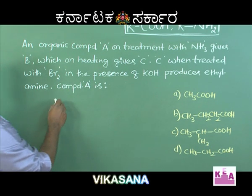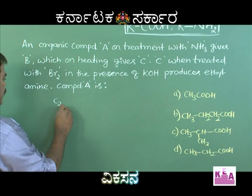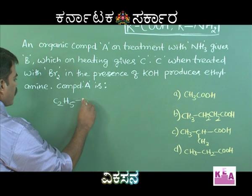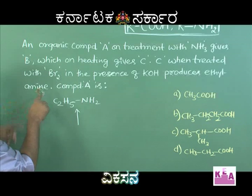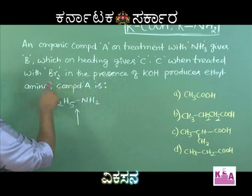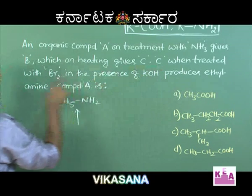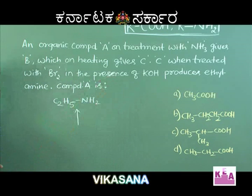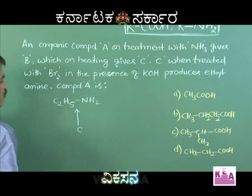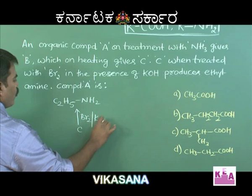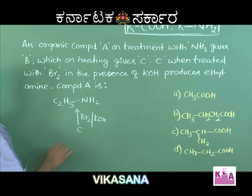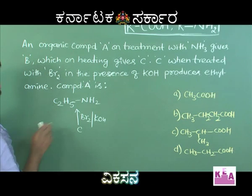The final product is ethylamine (C₂H₅NH₂). This is obtained when compound C is treated with bromine in the presence of KOH — a Hofmann bromamide reaction. So compound C must be an amide. Since ethylamine has two carbons, compound C must be a three-carbon amide — propanamide.